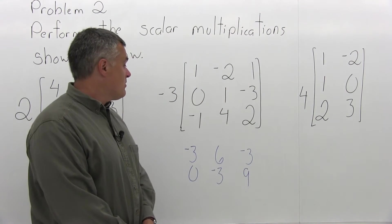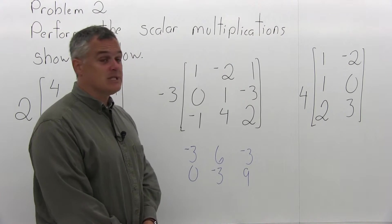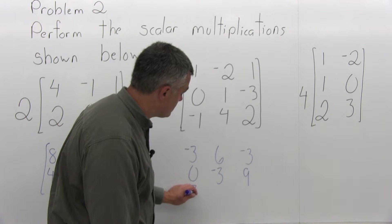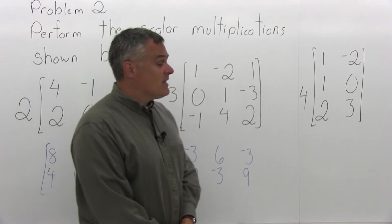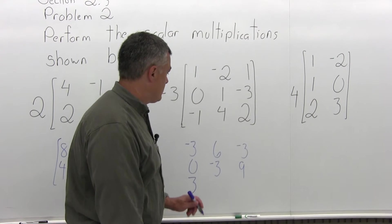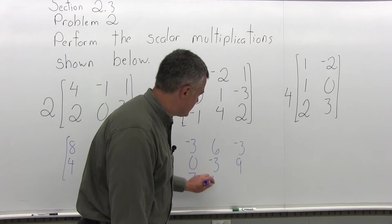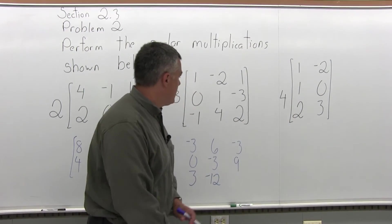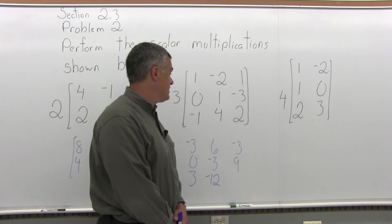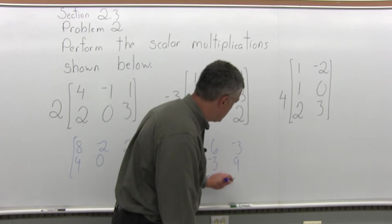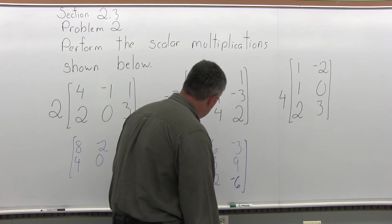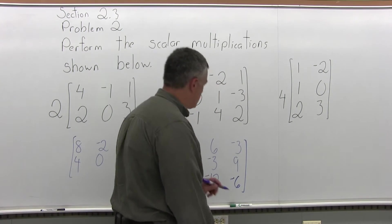And finally the bottom row: the bottom leftmost position is a negative 1, so negative 3 times negative 1 is positive 3. The bottom row middle position has a positive 4, so negative 3 times positive 4 is negative 12. And then in the bottom right position you have a 2, so negative 3 times positive 2 is negative 6. And that's the answer for that problem.